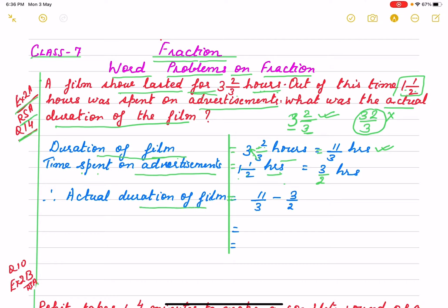The actual duration of the film is eleven by three minus three by two. When we subtract, we take LCM. The LCM of three and two as co-prime numbers is six. So: eleven by three becomes twenty-two by six, and three by two becomes nine by six. Twenty-two minus nine is thirteen by six. If you change it into a mixed fraction, it is two and one by six hours. This is the answer.